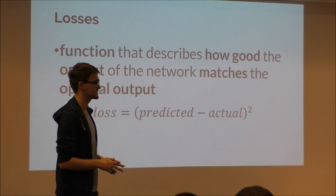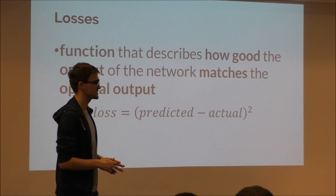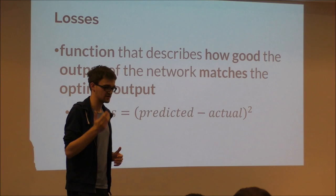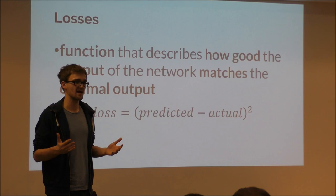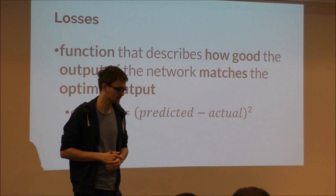Losses are just functions that describe how well the output of your model fits the desired output. For housing prices, it tells you how close the predicted price is to the actual price. Maybe you don't care if the price is too high or too low — your loss function should reflect that. One example is the squared loss.